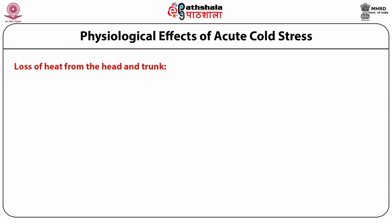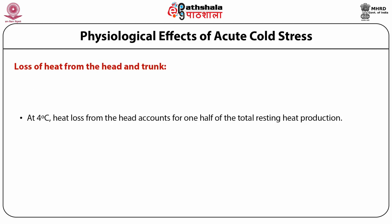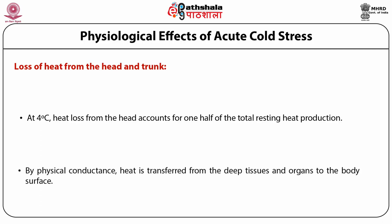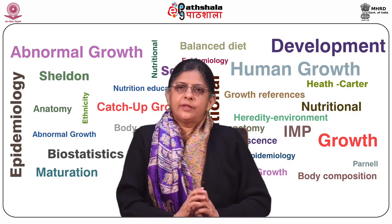Loss of heat from the head and trunk: at 4 degrees Celsius, heat loss from the head accounts for one half of total resting heat production. The facial skin, due to its close proximity to the thermal core areas, stabilizes well above freezing even under severe cold conditions, although facial circulation does not undergo vasoconstriction. By physical conductance, heat is transferred from deep tissues and organs to the body surface. A person immersed in cold water loses little heat from extremities and more heat from the trunk due to high tissue conductance in that area.